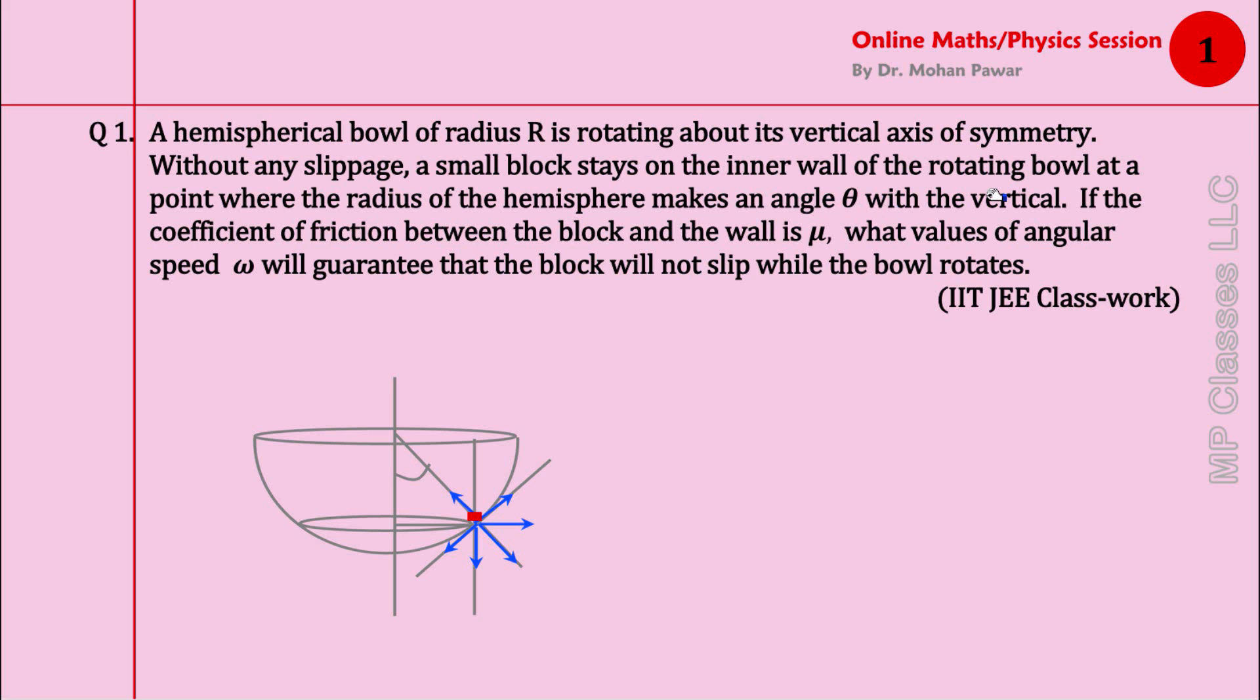We stop at this point and try to figure out the meaning in the given two sentences. So this is a hemispherical bowl, axis of symmetry vertical, and the bowl rotates in that direction. Here is the block on the inner wall.